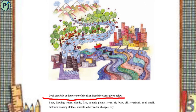Look carefully at the picture of the river. Read the words given below: boat, flowing water, clouds, fish, aquatic plants, river, big boat, oil, river bank, foul smell, factories, washing clothes, animals, other works, changes, city.